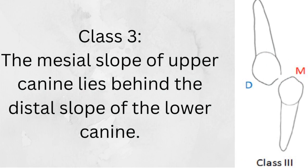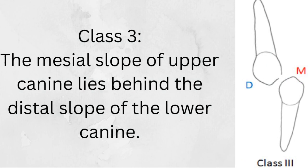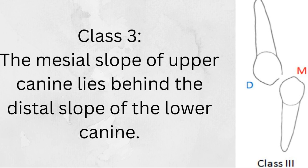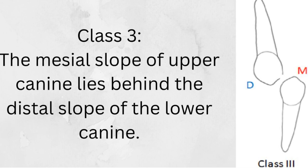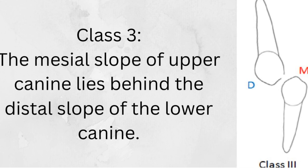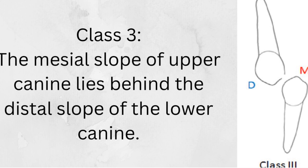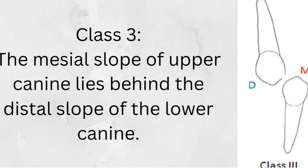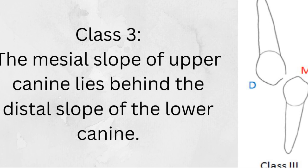In a Class 3 canine relation, the mesial slope of the upper canine lies behind the distal slope of the lower canine. So the upper canine is between the lower canine and the first premolar. Always Class 3 is between, just like the molar relationship.